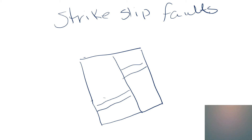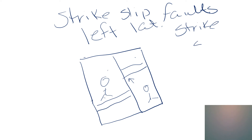Standing over here and looking at the other side, from our perspective it looks like the road has moved to the left. Standing over here, it also looks like the road has moved to the left. So no matter what side of the fault we're on, it looks like the other side has moved to the left — if that's the case, it's a left-lateral strike-slip fault.